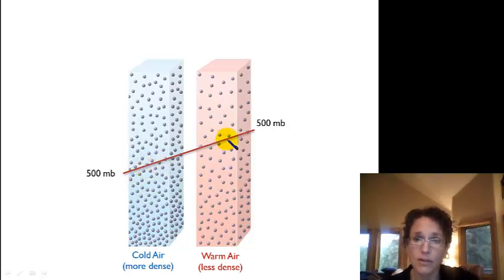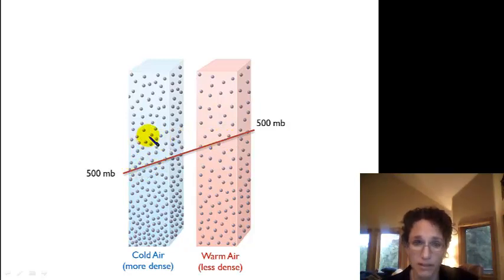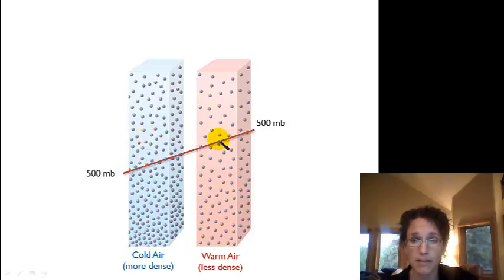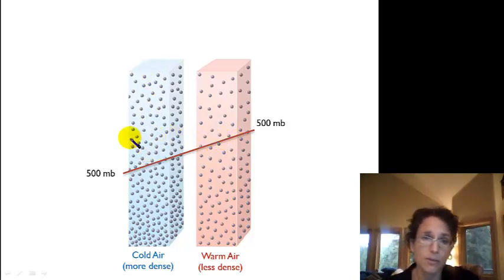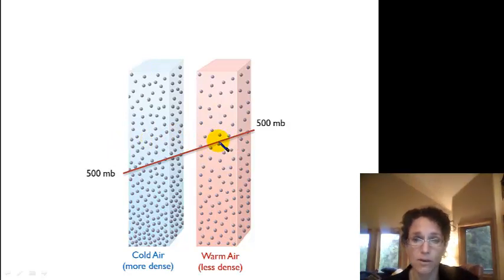If this column of warm air was next to a column of colder air at the same elevation, the colder air is at a lower pressure than the same elevation in the column of warmer air — because air pressure decreases as we go up in elevation. So our air is going to want to flow from this higher pressure point in the warm air column to the lower pressure point in the cold air column.